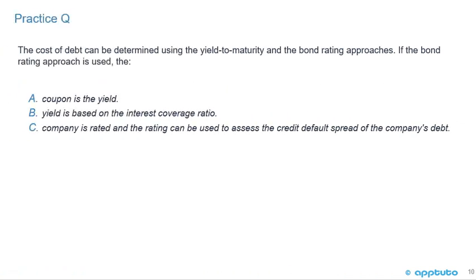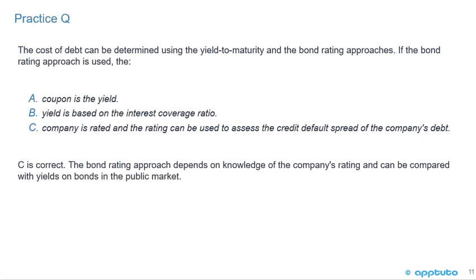To finish this LOS, here's a final practice question. The cost of debt can be determined using the yield to maturity and the bond rating approaches. If the bond rating approach is used: A) the coupon is the yield, B) the yield is based on the interest coverage ratio, or C) the company is rated and the rating can be used to assess the credit default spread of the company's debt. The answer is C — the bond rating approach depends on knowledge of the company's rating and can be compared with yields on bonds in the public market.